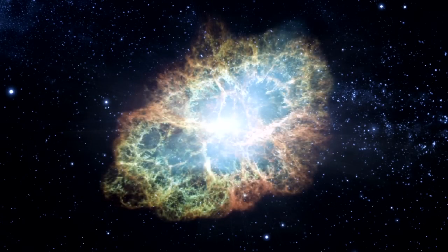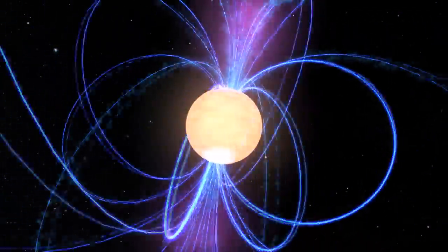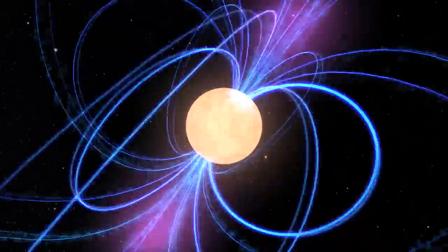The supernova left behind a magnetized neutron star, a pulsar. It's about the size of Washington DC, but it spins 30 times a second.